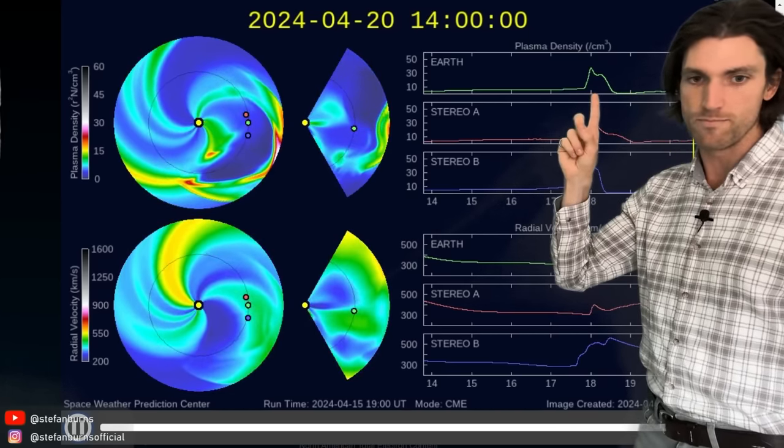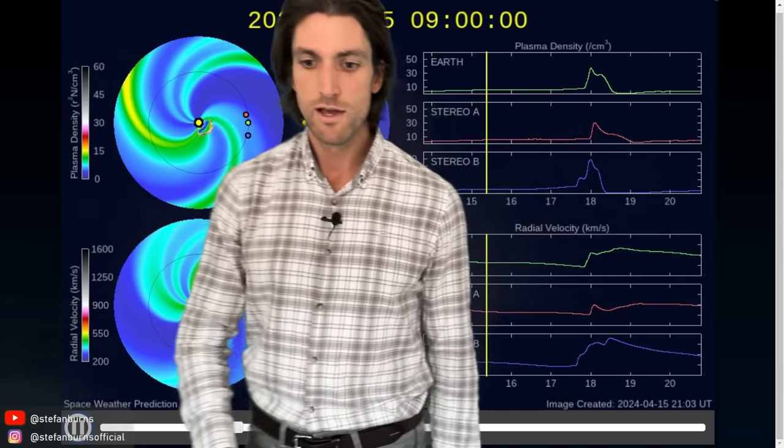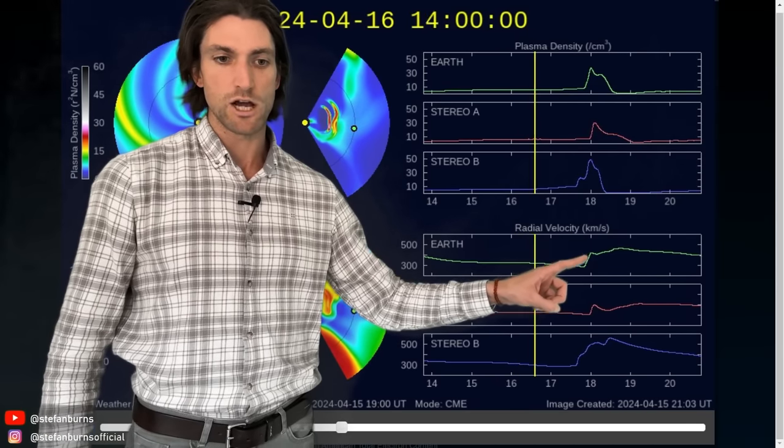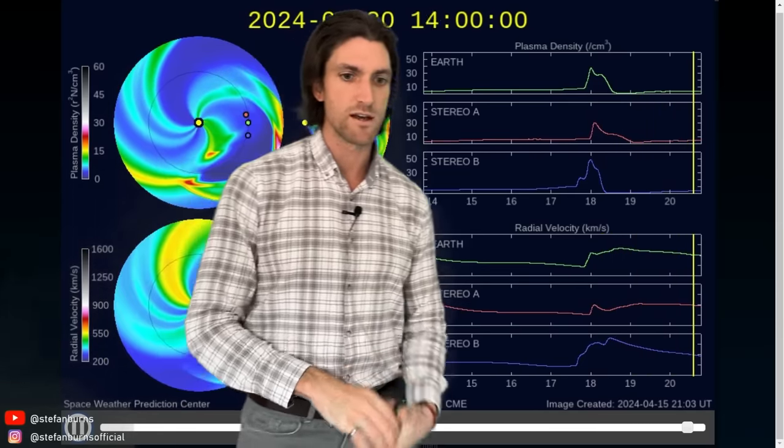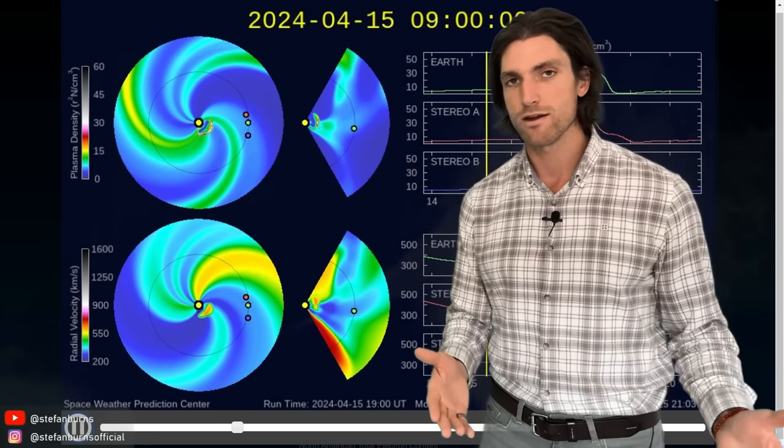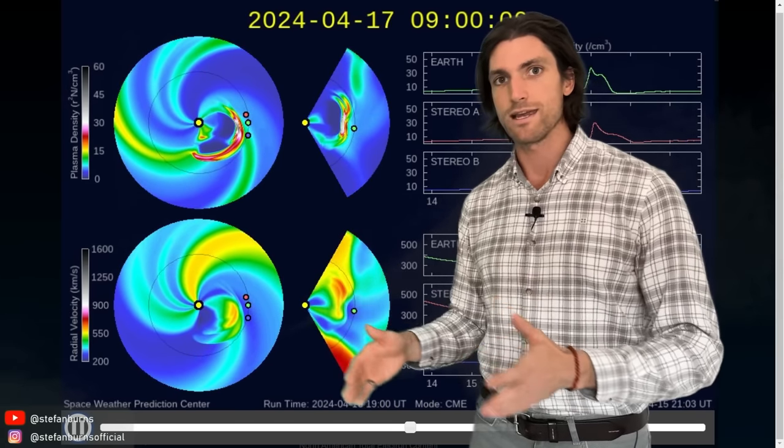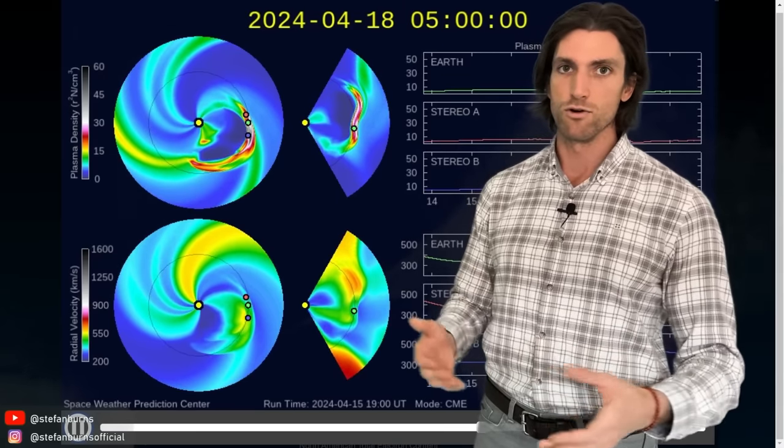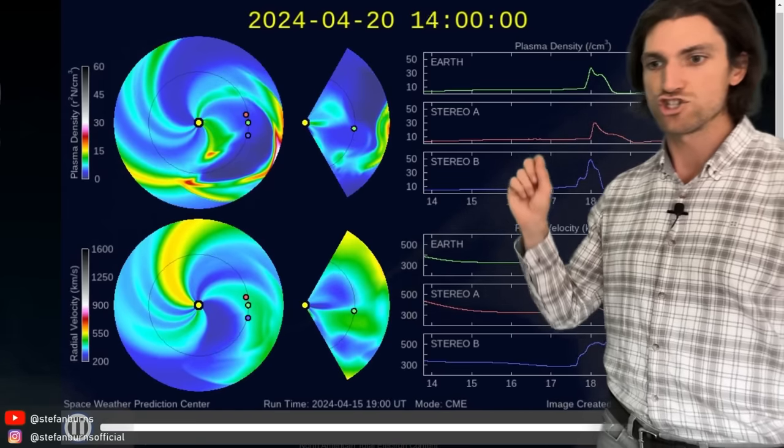So this goes up to about 40 or so on the plasma density according to this model. And if we look at the velocity, we also see the velocity go up. So it's both a plasma density bump and a velocity increase, which gives this potential coronal mass ejection impact even more strength. So we have this coming up around the 18th UTC time. So if you're in North America, this could be late for the 17th of April. And if you're more like in Asia, then this could be early morning hours of the 18th. If you're in Europe, then you're basically right on schedule.